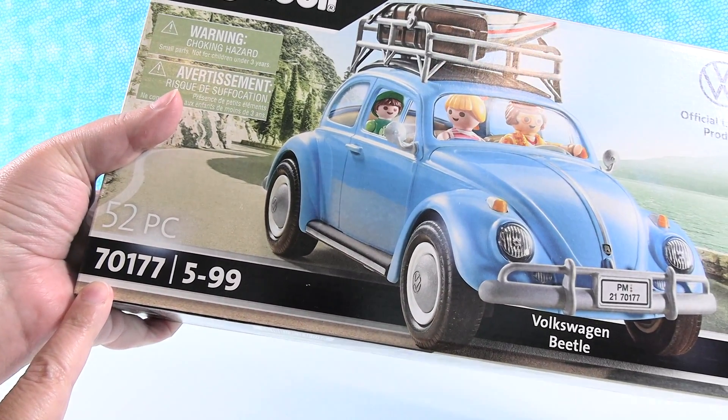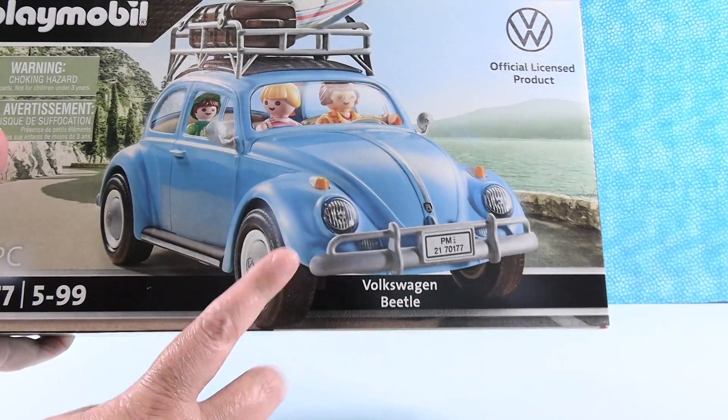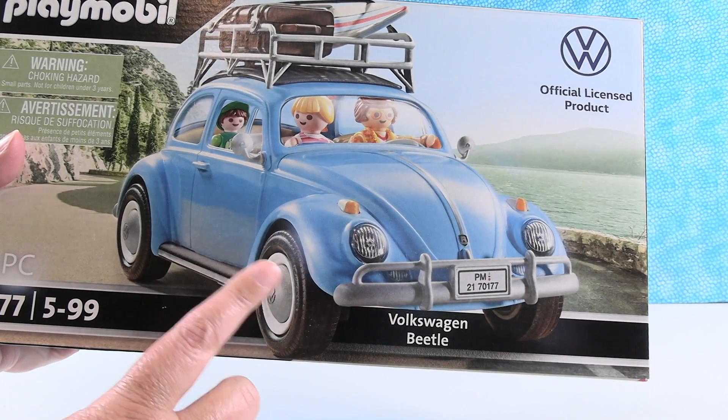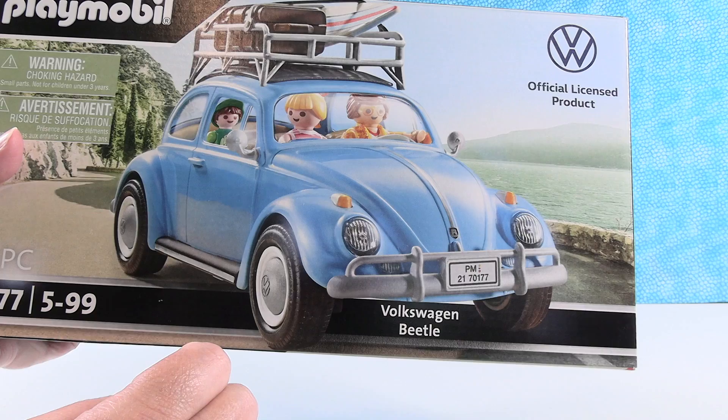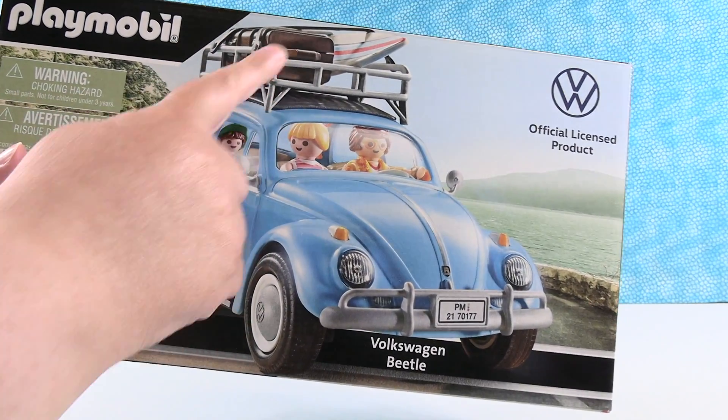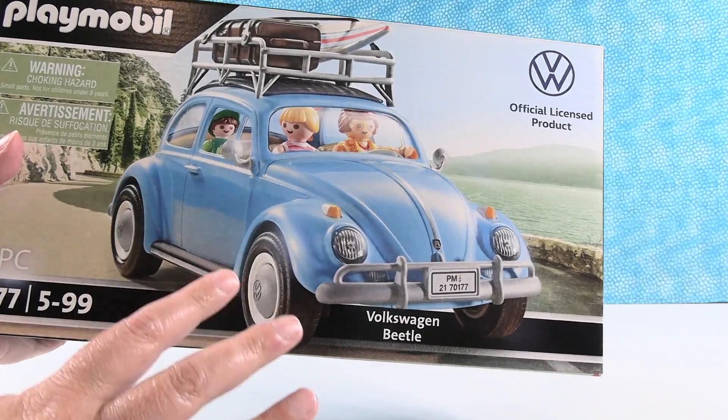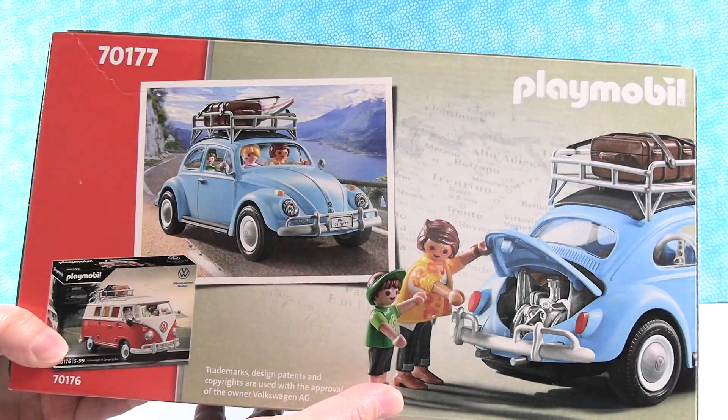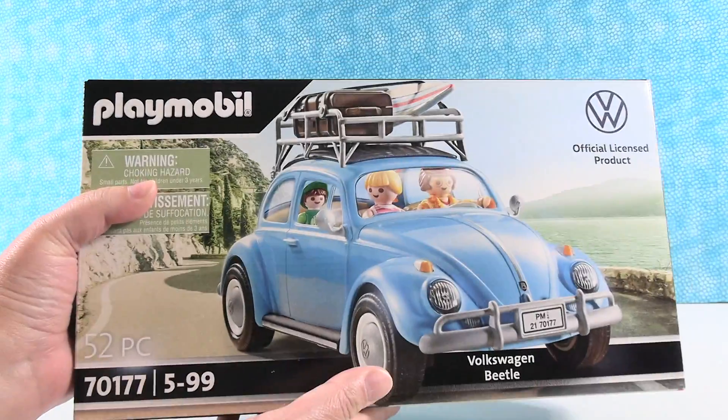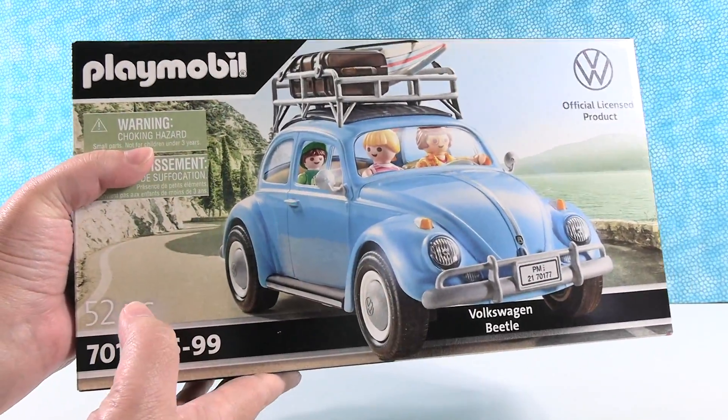This is set number 70177. It has 52 pieces and we're going to get to build this Volkswagen Beetle here and I'm going to have a fun story to share with you about that a little bit later in the video. But I love that you get the vehicle, the roof rack with the luggage and surfboard. They're going to the beach, going on vacation. This is just really cool and I can't wait to open it.